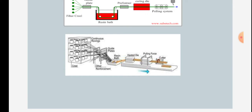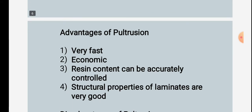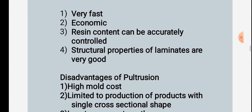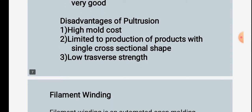Advantages of pultrusion: it is very fast and economical, resin content can be accurately controlled, and structural properties of laminates are very good. Disadvantages: high mold cost, limited to production of products with a single cross-sectional shape, and low transverse strength.